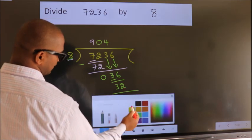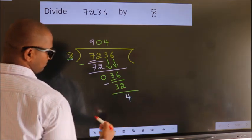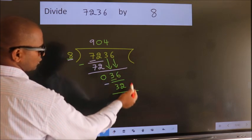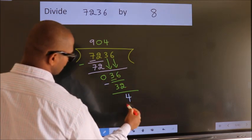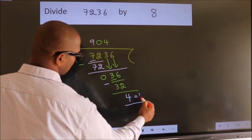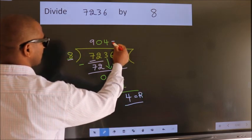Now, we subtract. We get 4. No more numbers to bring it down. So, we stop here. This is our remainder. This is our quotient.